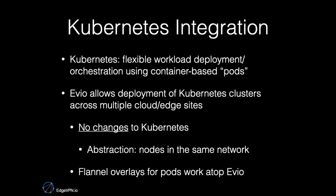Without changes to Kubernetes, EVO presents the abstraction of all nodes being on the same network. You can run Kubernetes components, deploy pods, and connect them using Flannel — an overlay that works without modification on top of EVO.